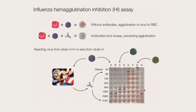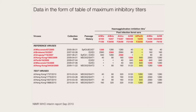At all the strain selection meetings, WHO folks get together and look at tables like this — a panel of reference viruses and reference sera. For example, Wisconsin 67 from 2005 has a high titer to itself, but then low titers to viruses from 2009, meaning infection with that 2005 virus would not provide much protection against 2009 viruses. Because it's expensive to make all these ferret sera, they only do that for a small panel of reference viruses, and then also look at a number of different test viruses.